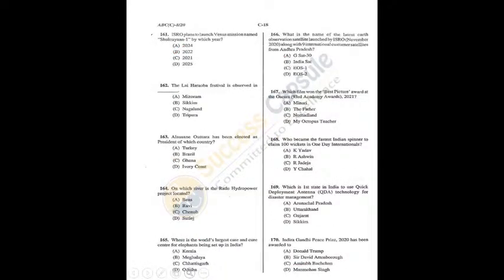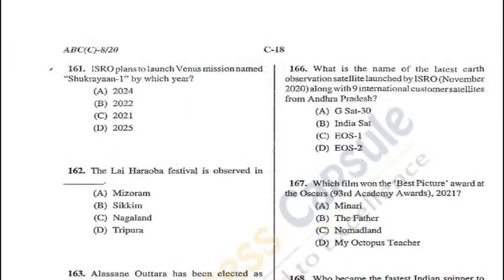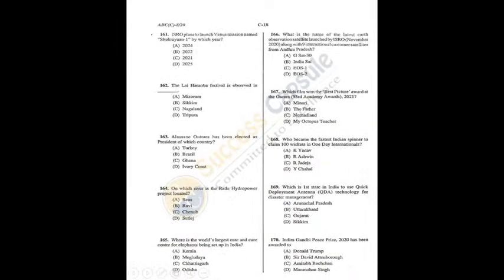Question 161: ISRO plans to launch Shukrayaan-1, a Venus mission, by 2024 (postponed due to COVID-19) — A is the answer. Question 162: The Lai Haraoba festival is largely observed in Manipur but also in Meitei communities in Tripura — Tripura is the answer in this context. Q161 = A.